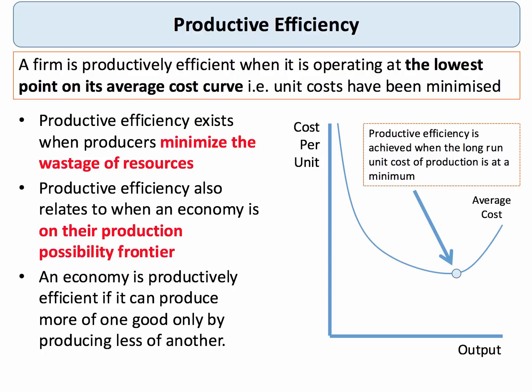A firm is productively efficient when it's supplying goods and services at the lowest point on its unit cost curve, as shown in my diagram here. Another way of thinking about productive efficiency is when a business successfully minimizes the amount of wastage of any resources. We can also link it to the PPF.